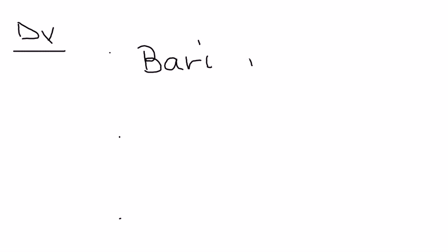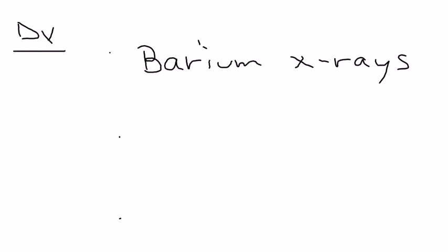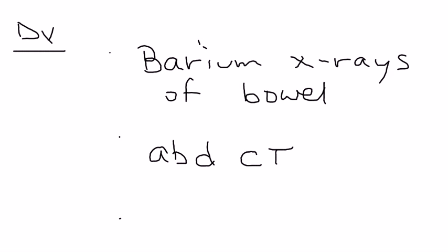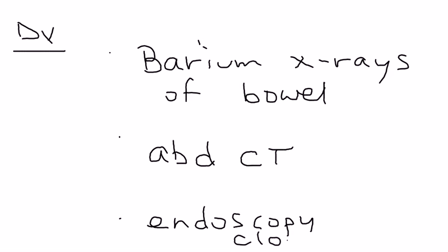There are three main ways to diagnose Crohn's disease. The most common is barium x-rays, where the patient ingests barium and x-rays of the GI tract are taken, showing a characteristic picture of Crohn's disease in both the small and large intestine. A more expensive option is an abdominal CT scan. A very common method for diagnosing GI conditions is colonoscopy or endoscopy.